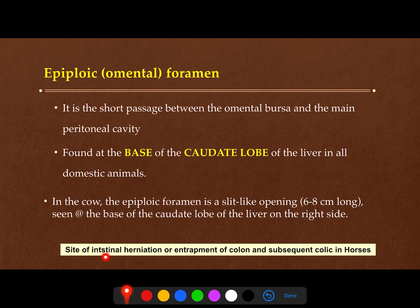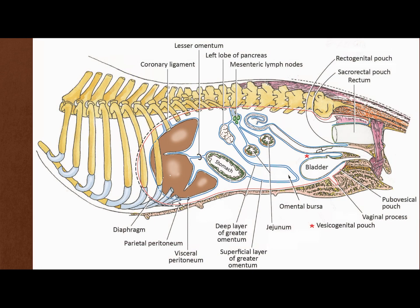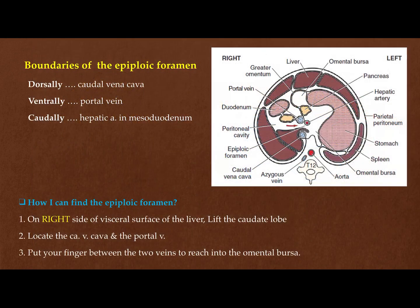The omental foramen is a site of intestinal herniation or entrapment of different parts of the intestine or colon, and it will lead to colic — especially in horses, but also in other animals as well.